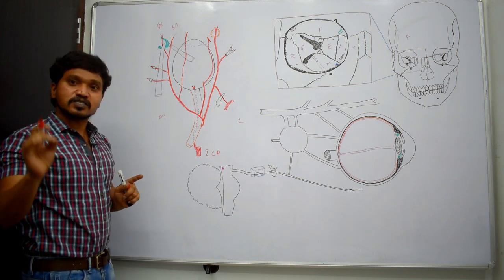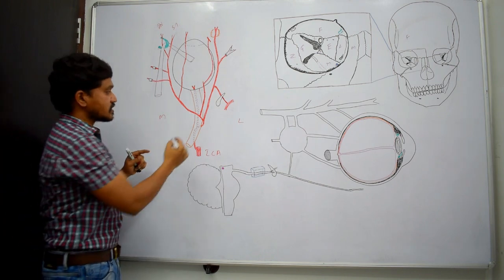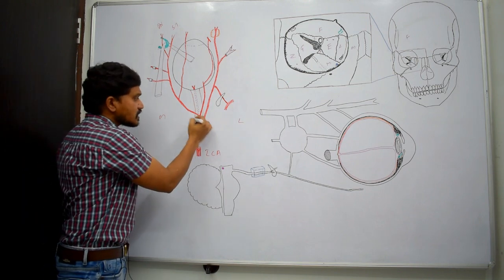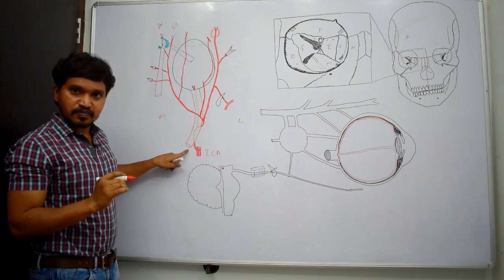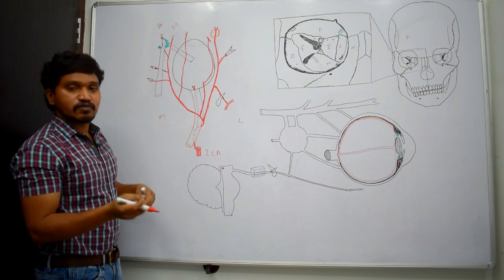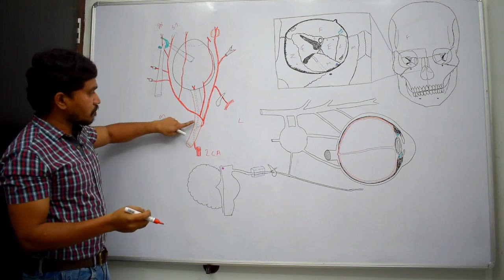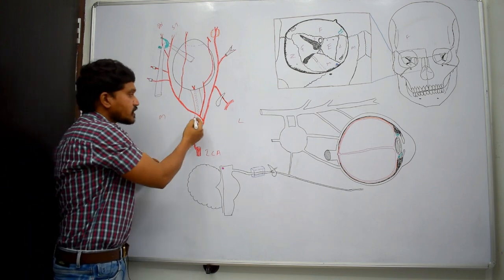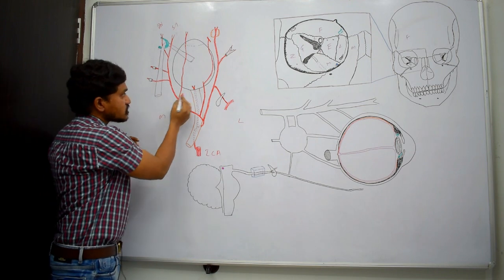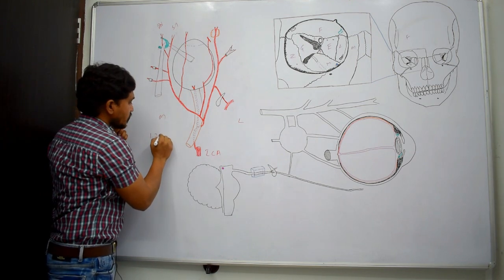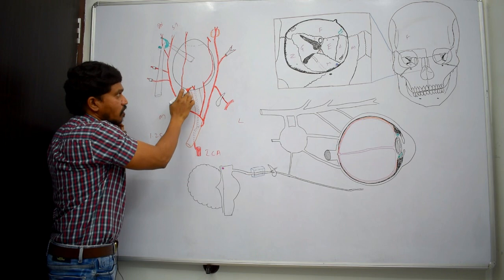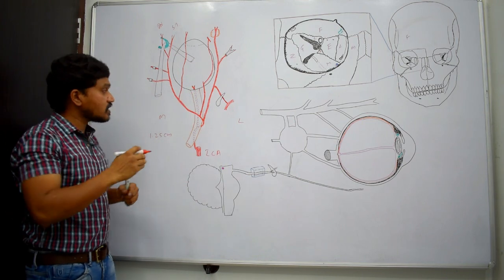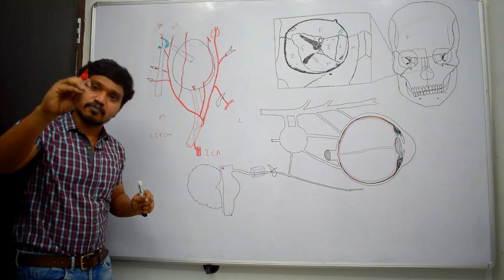The first and most important branch is the central artery of the retina. This central artery is the first branch from the ophthalmic artery. Initially this artery is present below the optic nerve, then it runs some distance between the optic nerve and the dural sheath. When it reaches 1.25 centimeters behind the eyeball, it pierces the optic nerve and passes within the substance of the optic nerve.